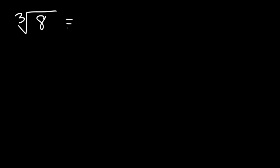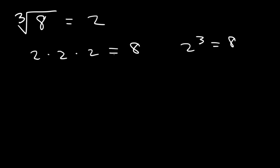Now let's talk about cube roots. What is the cube root of 8? What number times itself 3 times is 8? 2 times 2 times 2 is 8, which is basically 2 to the third. So therefore the cube root of 8 is 2.